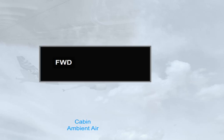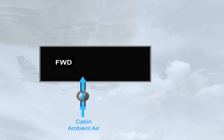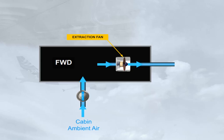Ambient air from the cabin area enters the cargo compartment via an inlet isolation valve. The air is removed from the compartment, either by an extraction fan when running, or by differential pressure when in flight, then the air is discharged overboard via an outlet isolation valve.